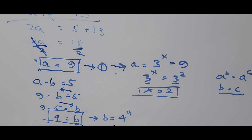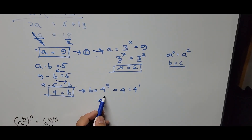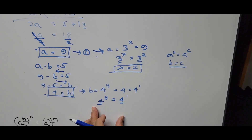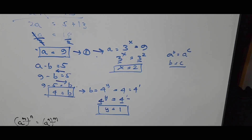For b: 4 raised to the power of Y equals 4, and 4 can be written as 4 raised to the power of 1. So 4^Y equals 4^1. The bases are the same, so equating the exponents gives Y equals 1. Therefore Y equals 1 and X equals 2.